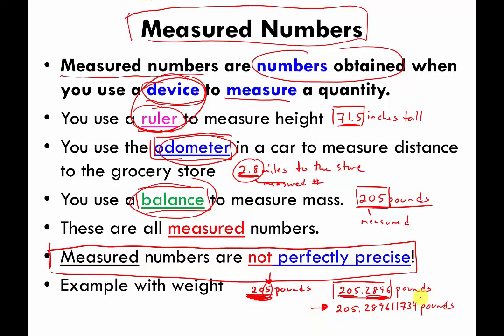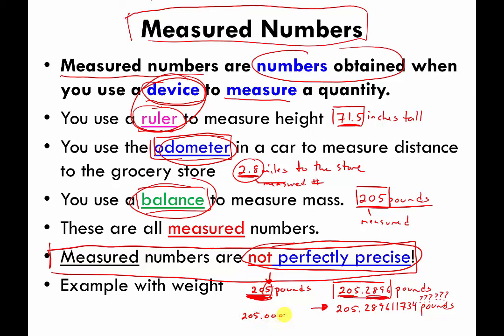There may always be numbers hidden — shown here with question marks — past the last decimal point that your device is good enough to measure. Whenever you make a measurement, it's not going to be perfectly precise. The only time it will be perfectly precise is if you get lucky. If I happen to weigh exactly 205.0000 going on forever pounds, then the scale might correctly say I weigh 205 — but that's a very rare situation. It's much more common that whatever measurement you make will not be perfectly precise.